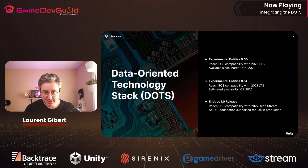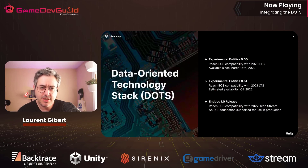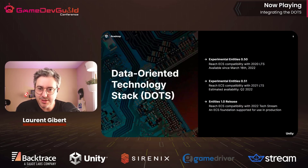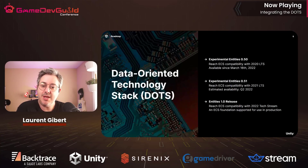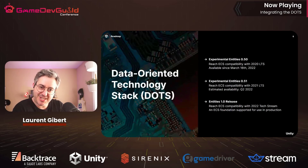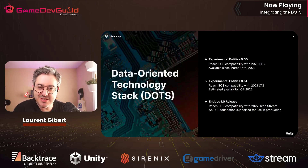The path to 1.0 involves three steps: first, Entities 0.50, released just before GDC, bringing compatibility with 2020 LTS — still experimental. Then 0.51, planned for this quarter, bringing compatibility with 2021 LTS. And then the real target, Entities 1.0, compatible with an LTS version where ECS is fully supported for production.